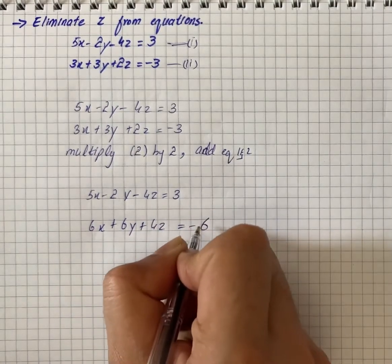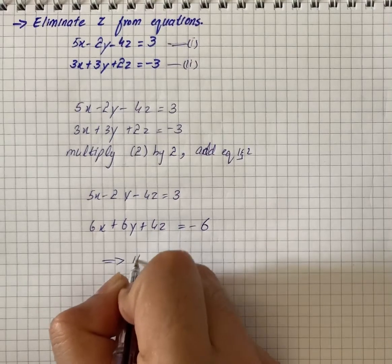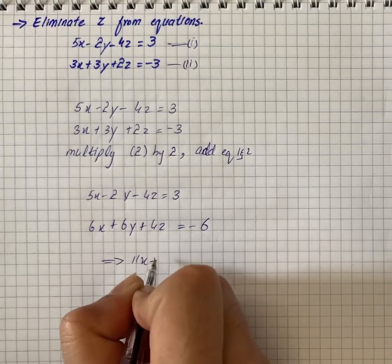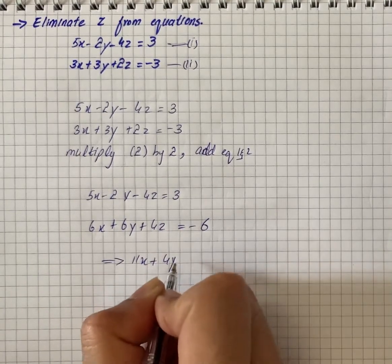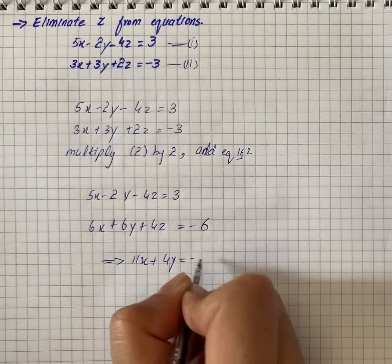So we have the equation 11x plus 4y equals to minus 3.